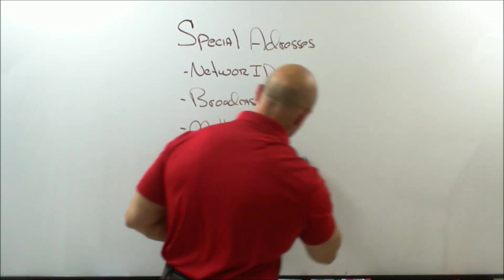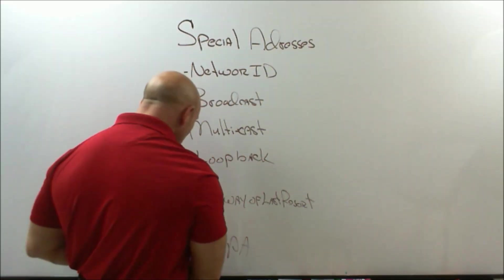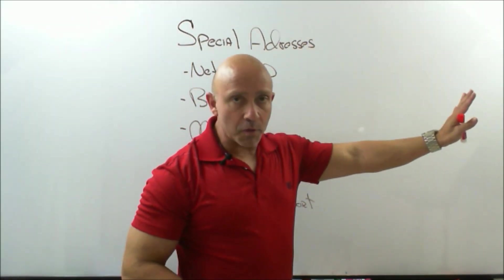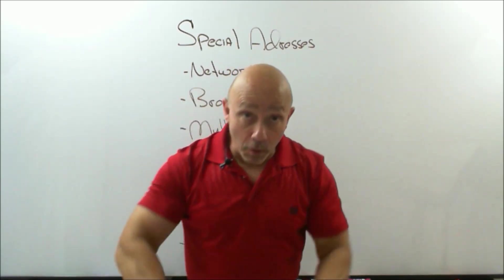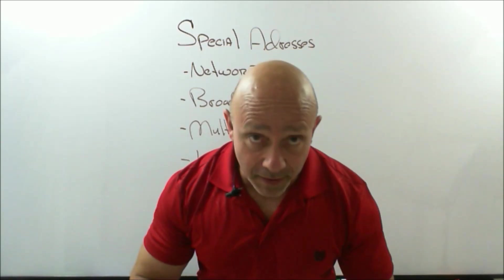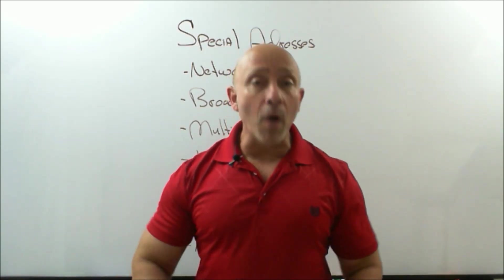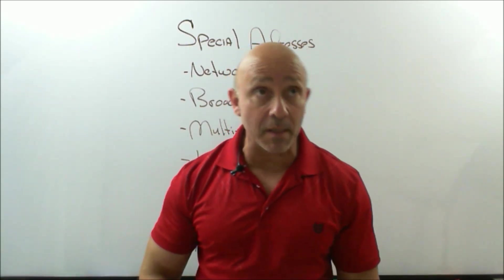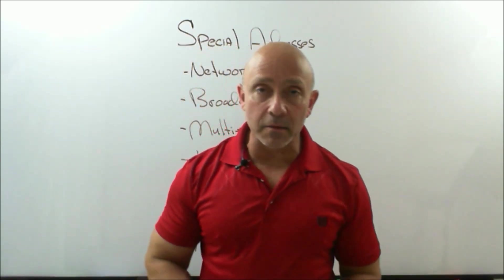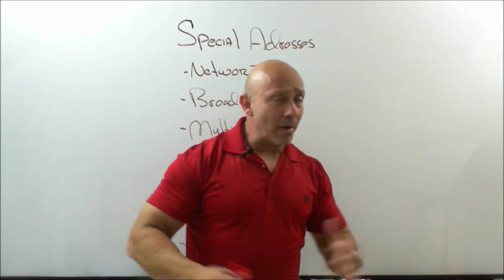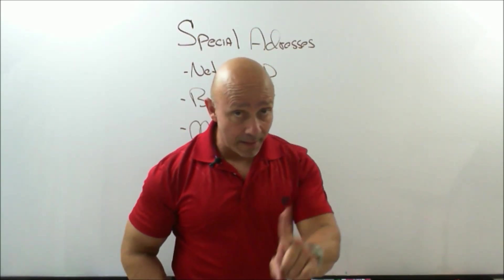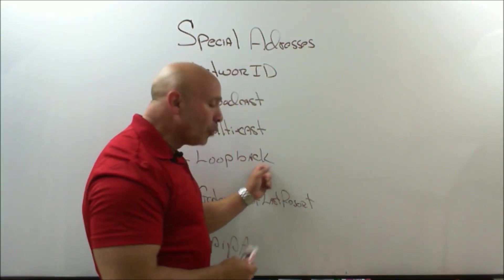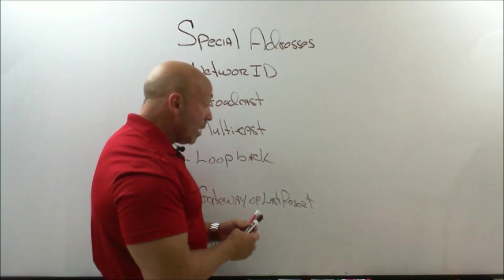The fourth address that a lot of people get confused is the loopback address. Now, again, we're talking about IP version 4, not IP version 6. That's another course altogether. This is IP version 4, because in the real world, you're still using IP version 4. In certifications, you're still using IP version 4. Regardless of the new certification that's coming out now, it's still IPv4. You may have to identify an IPv6, know what they look like, but as far as subnetting and route summarization, I haven't seen that in the new test yet.